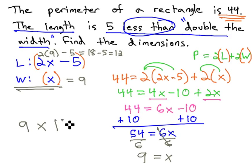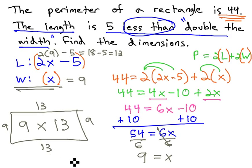We have a 9 by 13 rectangle. Notice if we have a rectangle with a width of 9 and a length of 13, adding up all the sides will give us a perimeter of 44.